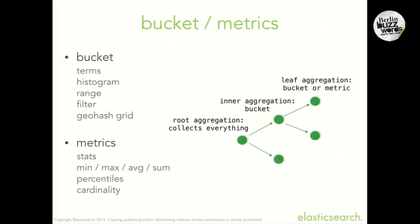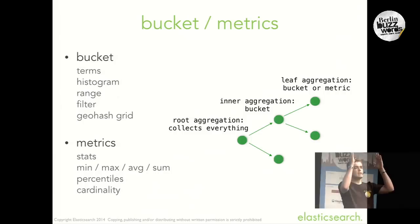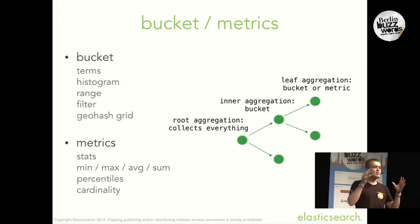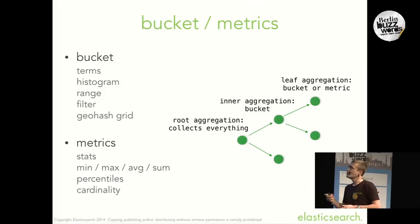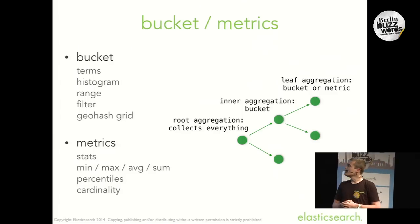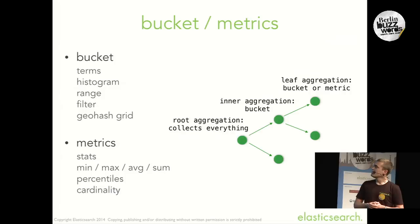So what does composability mean in the context of aggregations? There are two main kinds of aggregations within Elasticsearch. The first kind can be described as bucket aggregations, which are basically responsible for taking a set of documents and partitioning them into different sets. On the other hand, we also have metrics aggregations whose responsibility is to take a set of documents and compute something on them — anything from basic statistics like minimum, maximum, average, and sum, to something more interesting like approximate percentiles and unique counts.